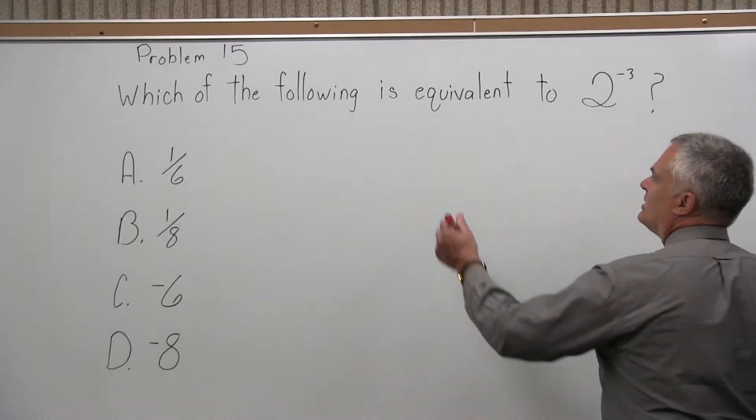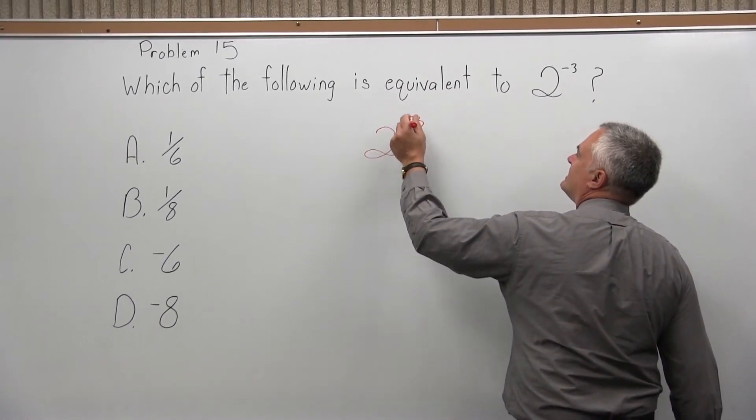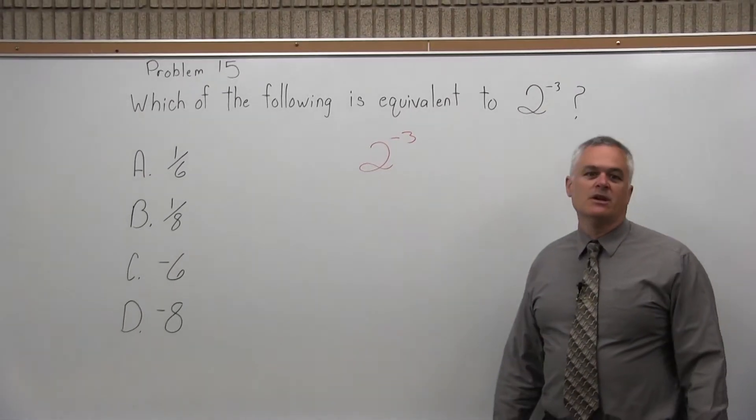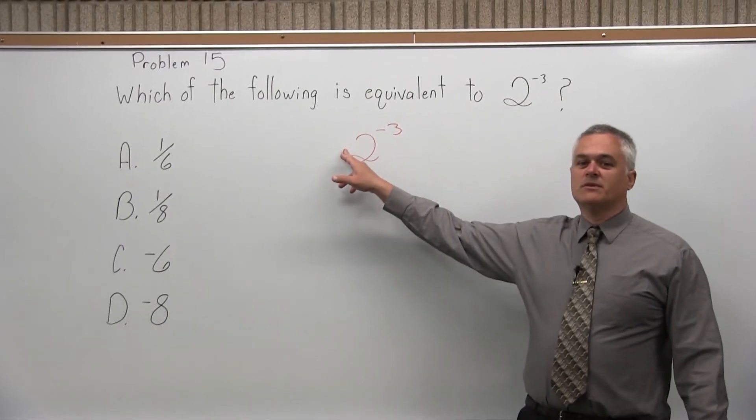Well, 2 to the negative 3, when you have a negative exponent, it doesn't necessarily mean that your final answer is negative, maybe it is and maybe it isn't. The negative is not in front of the base.